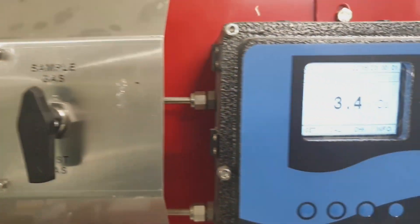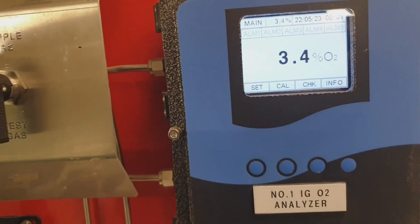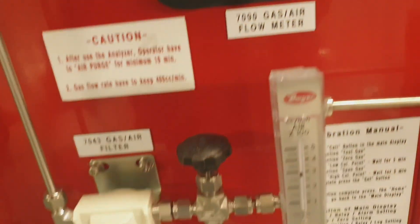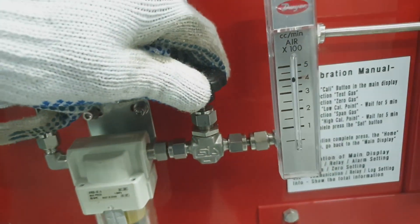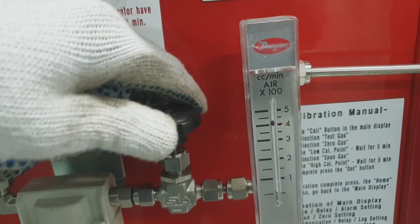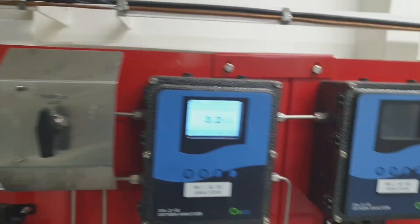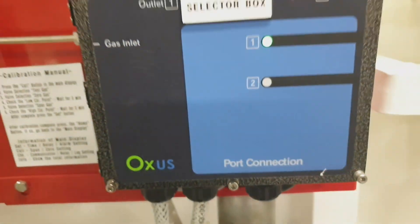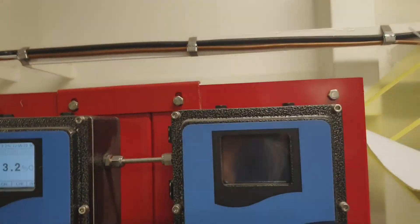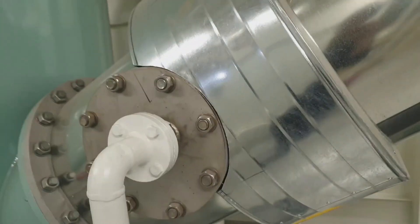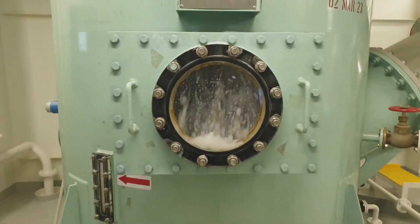As you can see, the oxygen content is 3.4 percent. This is the oxygen analyzer, which measures the oxygen concentration of inert gas. This is the flow control of the inert gas sample. And this is the nitrogen gas for calibration of the oxygen analyzer, together with the compressed air for calibration of the oxygen analyzer. As you can see, this line is coming from the outside valve from the auxiliary boiler.